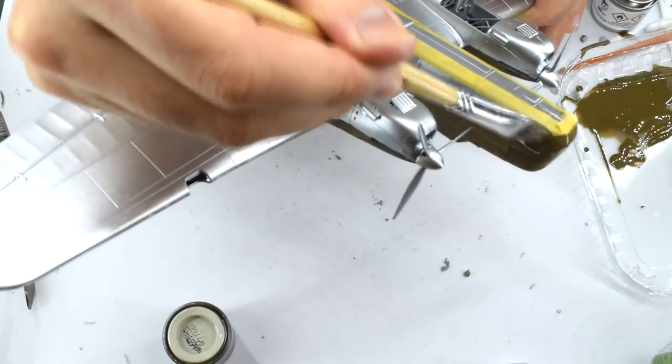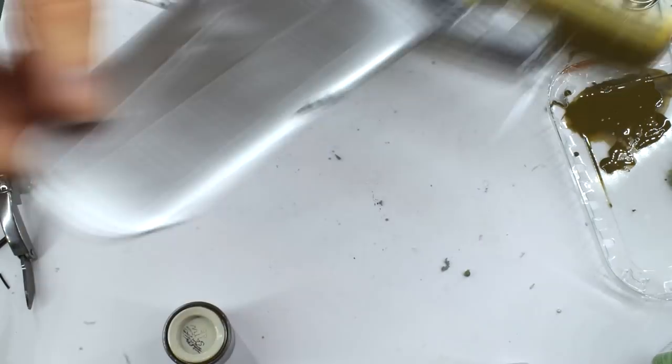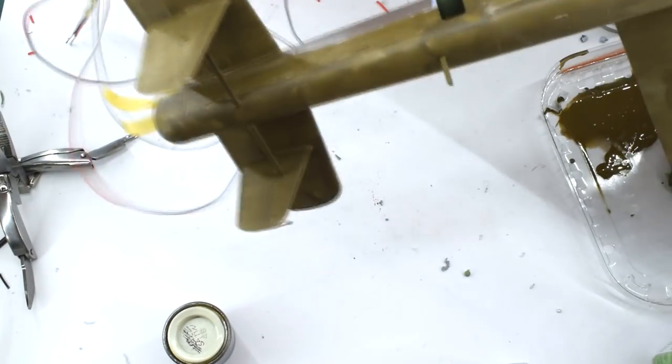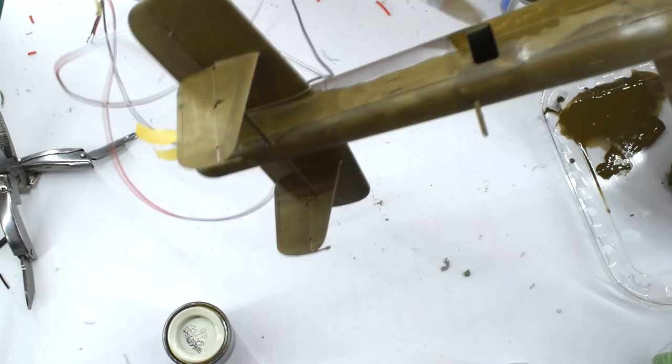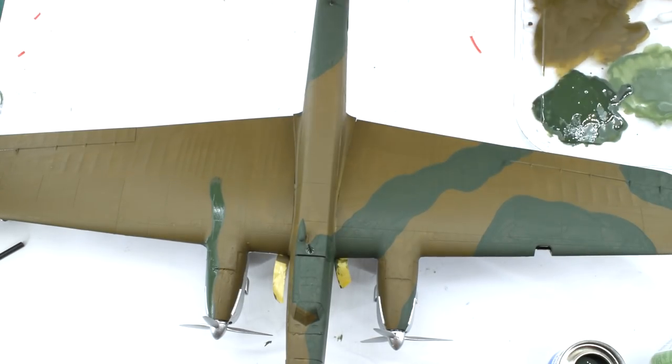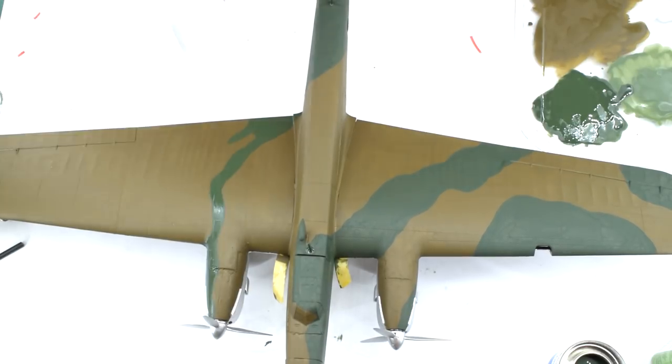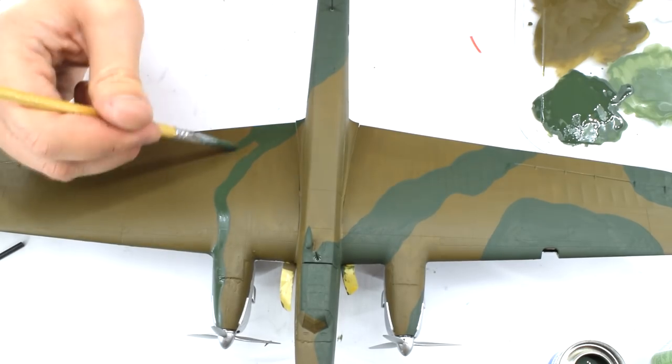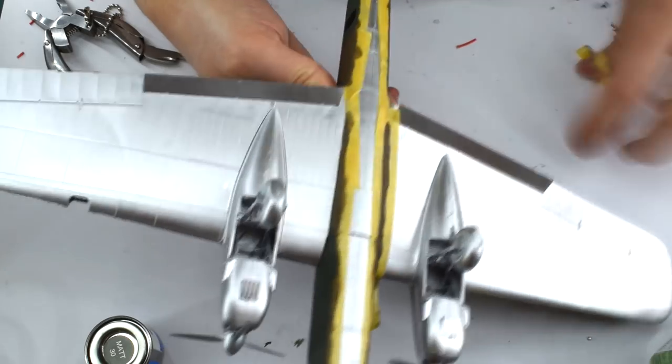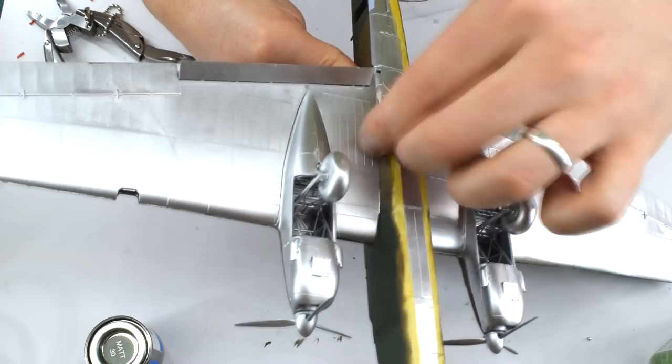Humbrol 29 enamel dark earth paint was thinned with a little white spirit, and then brushed over the entire top surface of the model. Thinning the paint will help prevent brush strokes, but a number of layers will be needed. When I was happy with the brown, Humbrol 30 dark green enamel was also thinned, and then applied in a camouflage pattern following the instructions by eye. This colour would also need a number of layers. With the paint now fully cured after a night of drying, the masking tape is removed and any paint bleed can be tidied up later.